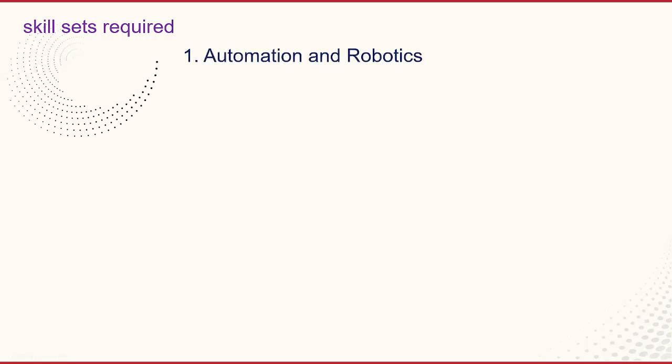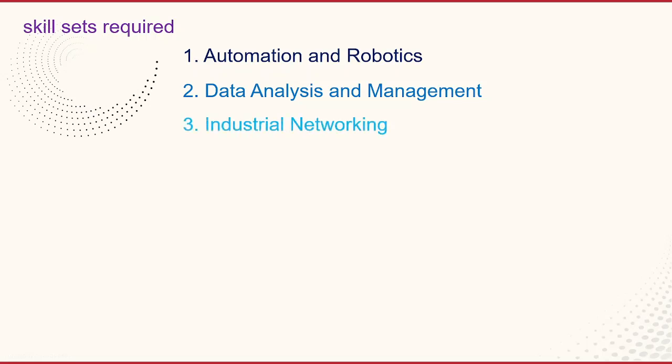These are several certificates available. Next, the skill sets required for smart manufacturing include: first, automation and robotics — knowledge of automation systems and robotics including programming, operation, and maintenance. Second, data analysis and management — the ability to collect, analyze, and manage large volumes of data generated by smart manufacturing systems, including skills in data analytics and machine learning. Third, industrial networking — understanding of industrial networking technologies and protocols including Ethernet, TCP/IP, and OPC.